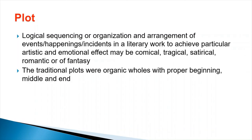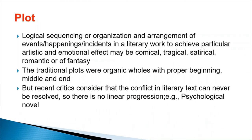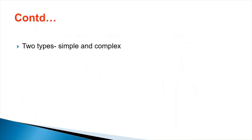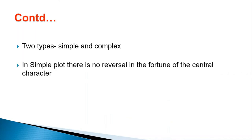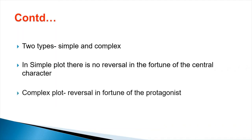The traditional plots were organic wholes — they had a proper beginning, middle and end. But in recent times, critics feel that the conflict in any literary text can never be resolved, because such is human life in reality also. So there is no linear progression in the plot of contemporary writers — for example, we can see psychological novels which move freely in time and space. Plot can be of two types: simple plot and complex plot. In a simple plot there is no reversal in the fortunes of the protagonist or the central character. If the protagonist faces ups and downs, or there is any reversal in the fortune of the central character, it is called a complex plot.